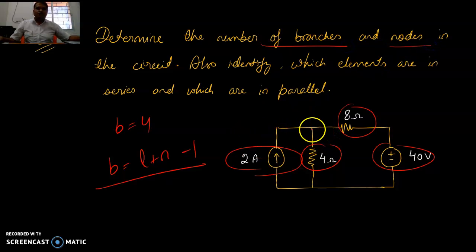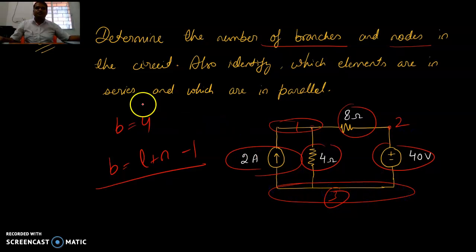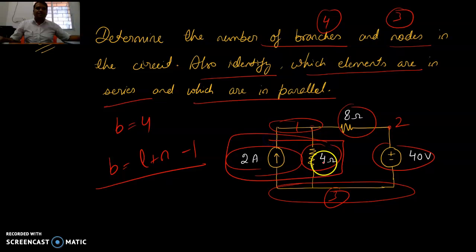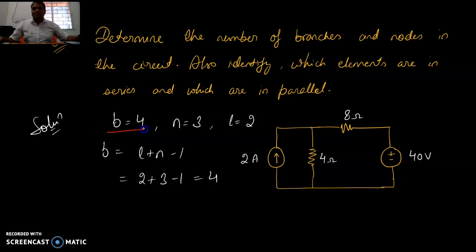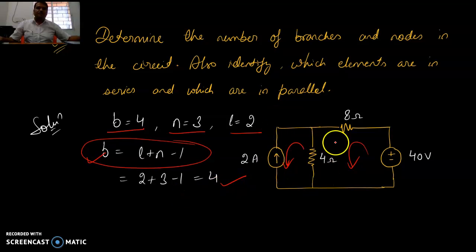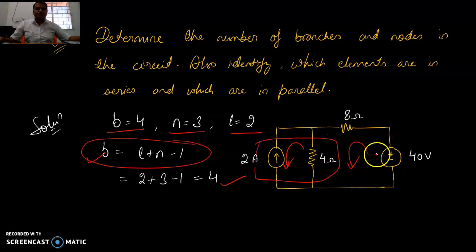For nodes: these two nodes can be merged to 1, this is node 2, and here 3 elements join to form node 3. So there are 3 nodes and 4 branches. Also, identify which elements are in series and which are in parallel. These two elements are in parallel, in series with the other elements. So B equals 4 and N equals 3, giving L equals 2 — two independent loops.